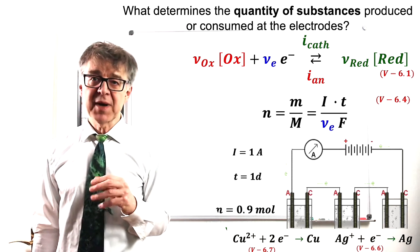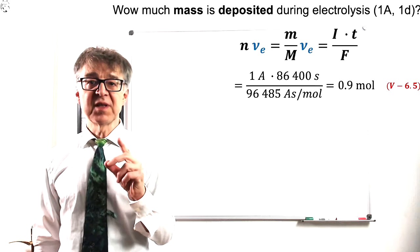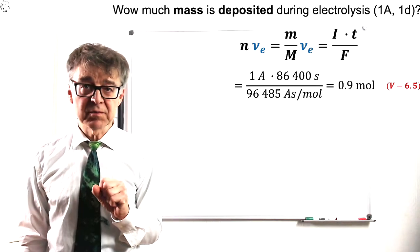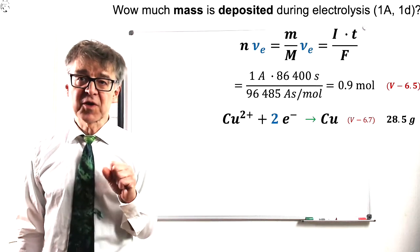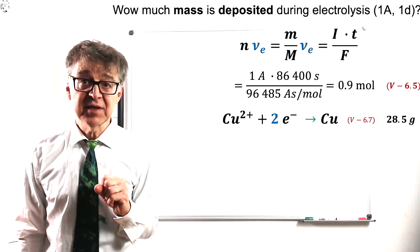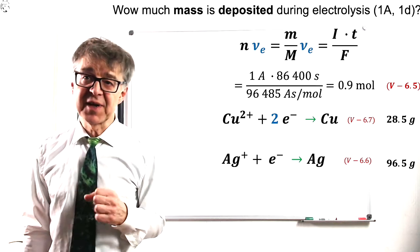If a current of 1A passes through several electrolytic cells for one day, 0.9 moles of electrons will flow. These can produce 0.45 moles of copper from copper chloride electrolyte, or 0.9 moles of silver from silver nitrite electrolyte.